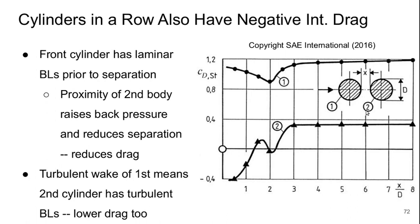And then the turbulent wake from the first body means that the second body has turbulent boundary layers right away, which tends to increase its resistance to separation and reduce its drag too. There is a transition around two characteristic lengths apart where the drag starts to rise again, but still there's overall a negative interference drag.